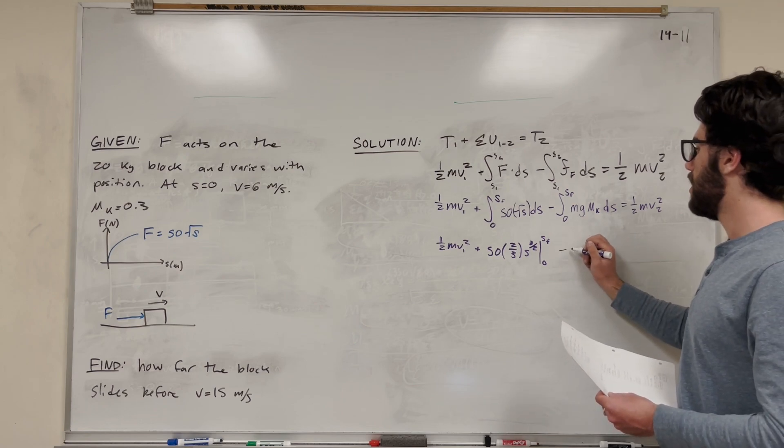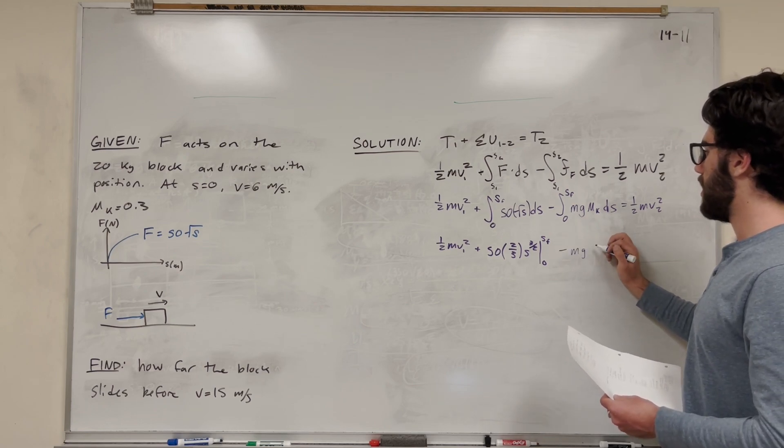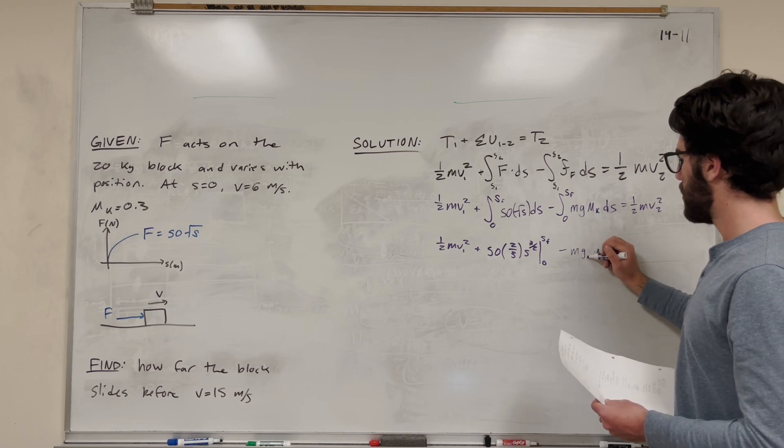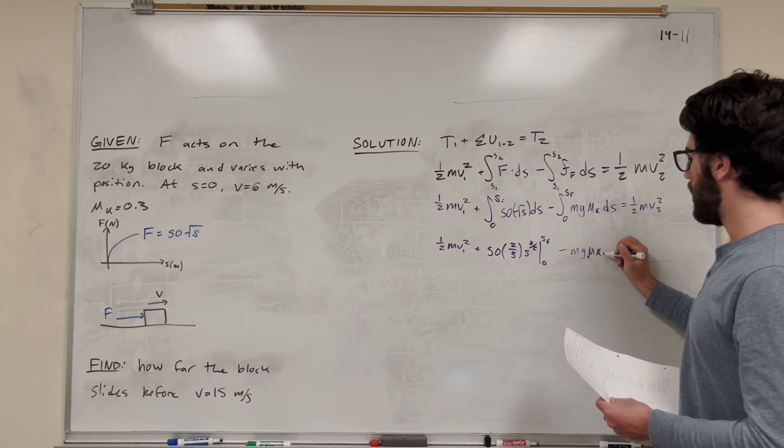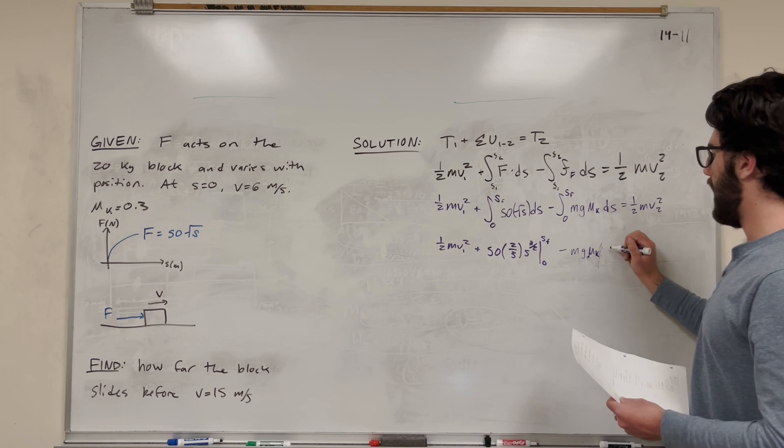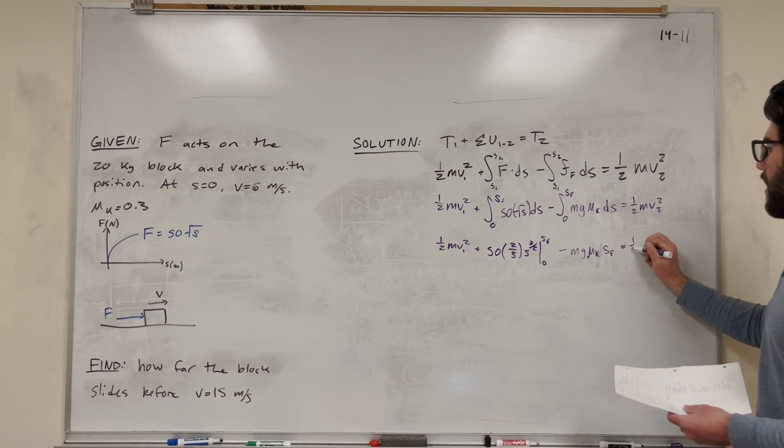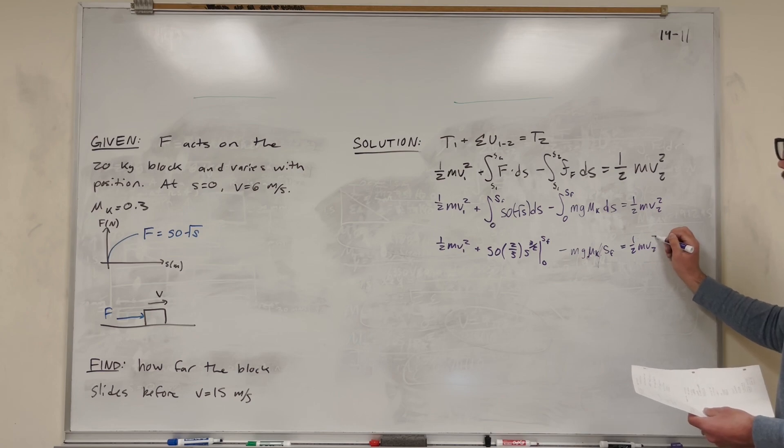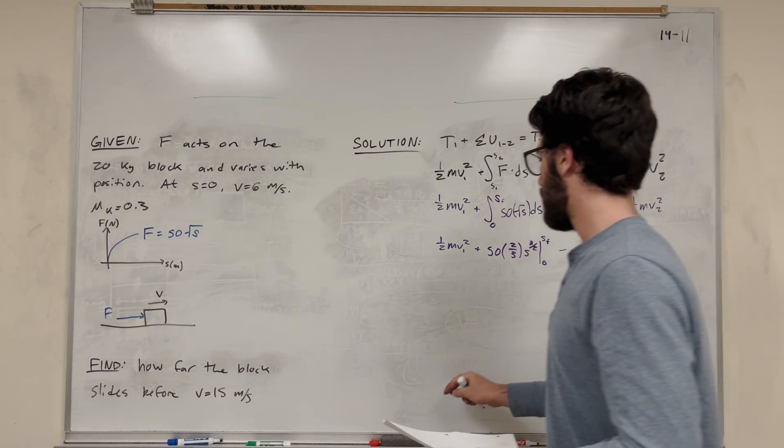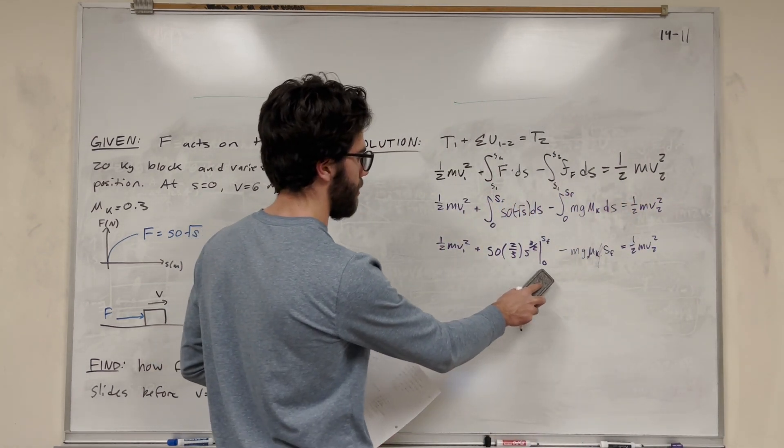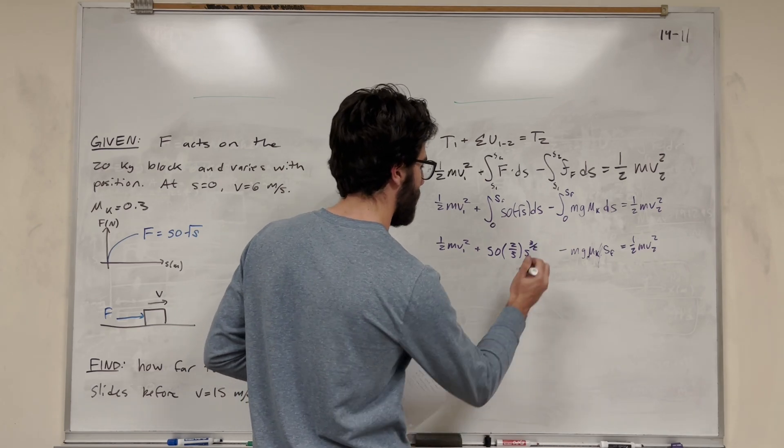The only thing in here is no s, so what happens is we're going to put in an s, this will be an s final. We can really simply do this integral. It's minus mass, gravity, coefficient of kinetic friction, and then s final. And then this is equal to one-half mass velocity 2 squared. Also, this is just going to become s final, so I don't even have to do that last step.